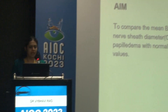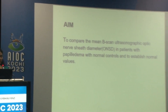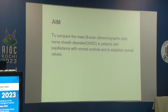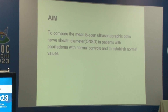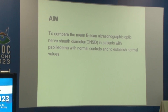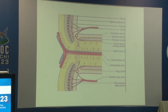The aim of my study was to compare mean B-scan ultrasonographic optic nerve sheath diameter in patients with papilledema and normal controls, and to establish normal values.